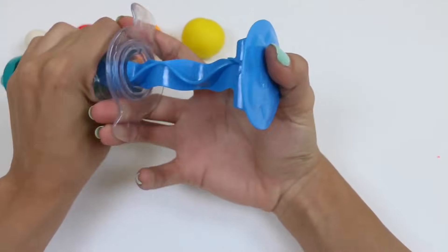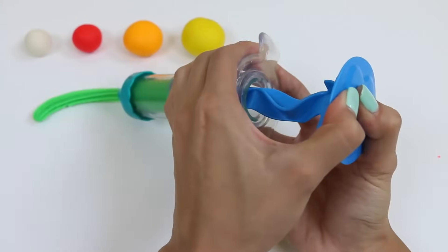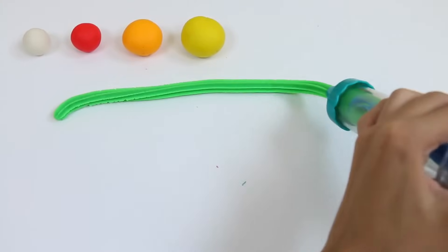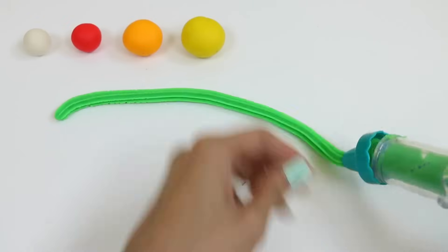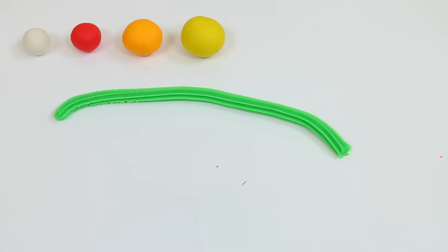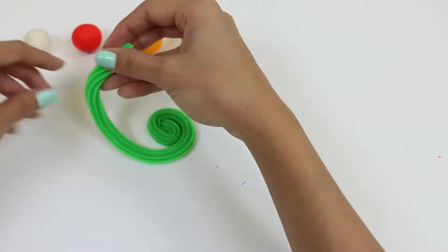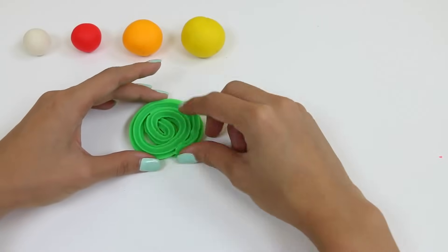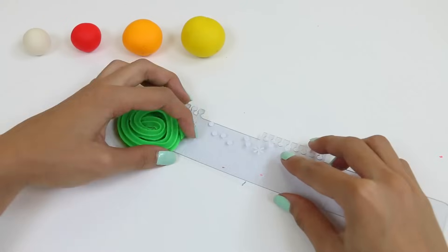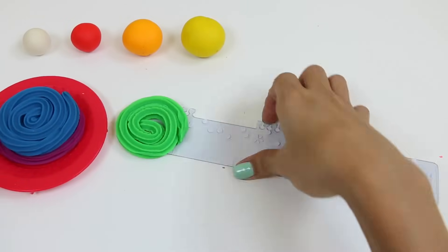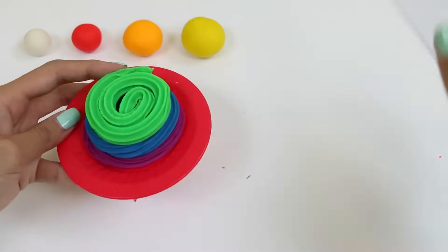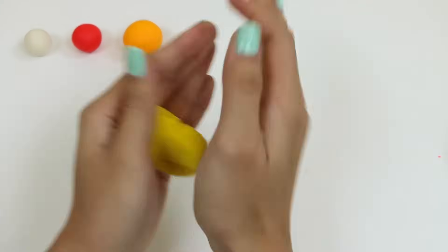And remember, the green one's gonna be slightly smaller than the blue one. Let's give it a little twirl. Mmm, look at all those layers.